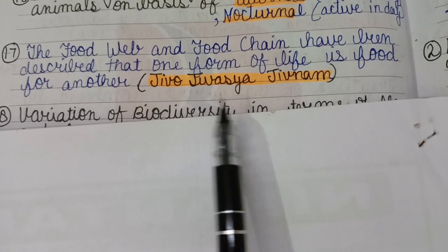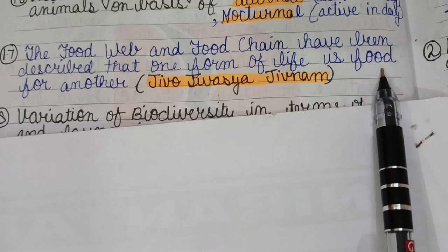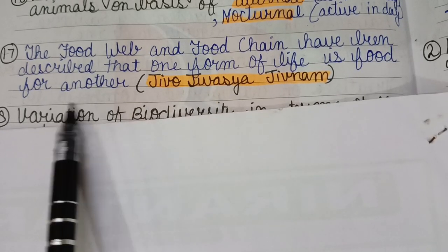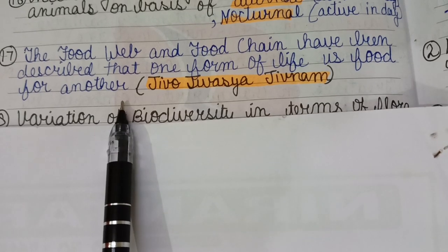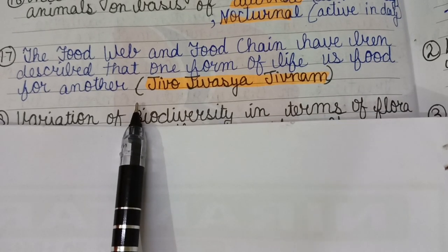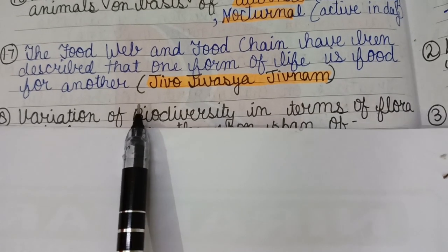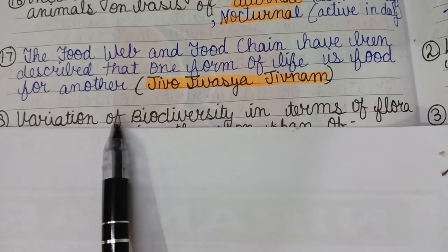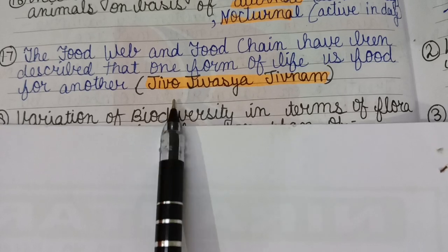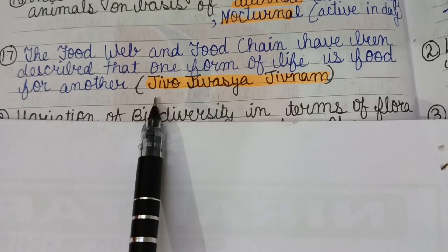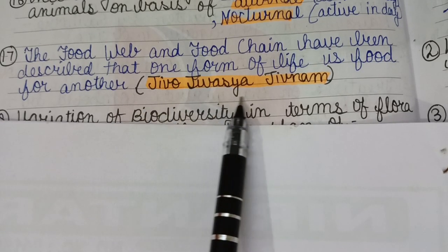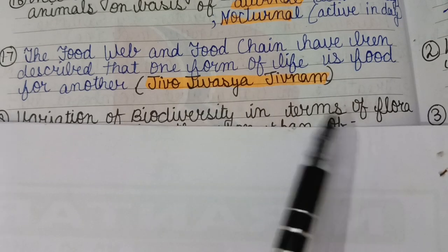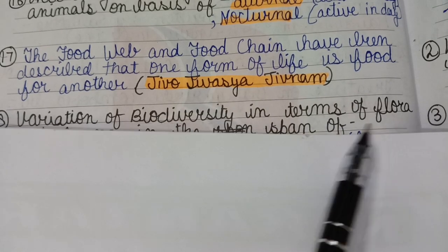The food web and food chain have been described as one form of life being food for another - all living things depend on each other directly or indirectly. In Sanskrit this is expressed as 'Jeevo Jeevasya Jeevanam' - every living being is food for another living being.